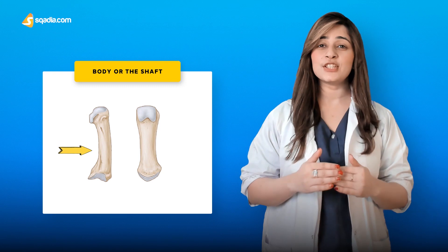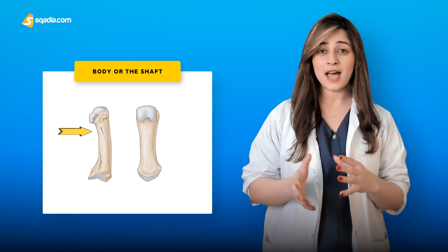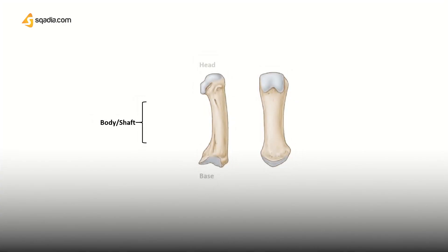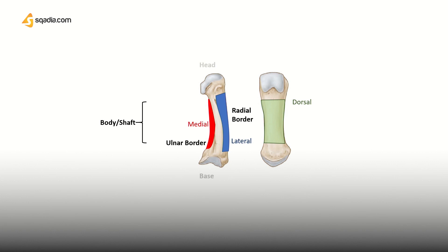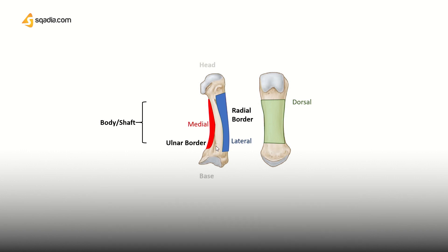The body or shaft of the metacarpal bone is prismoid and curved in shape — convex posteriorly and concave anteriorly. The body has three surfaces: medial, lateral, and dorsal. It has two borders: the ulnar border and the radial border. The medial and lateral surfaces are concave and separated from one another by a prominent anterior ridge. In the distal two-thirds of the dorsal surface, there is a smooth triangular flattened area covered by the tendons of the extensor muscles.